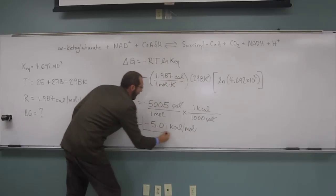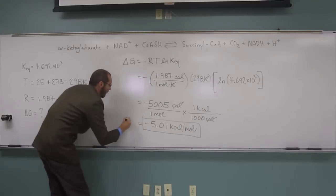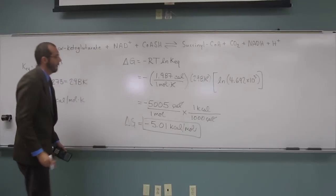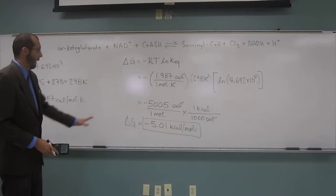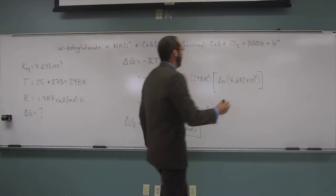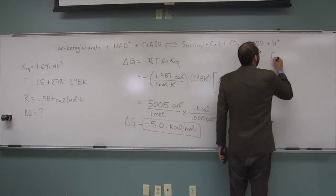Okay, so that is what delta G is. So would this be a favorable or unfavorable reaction? Favorable. Favorable why? Because it's negative. Negative delta G, so that means favorable.